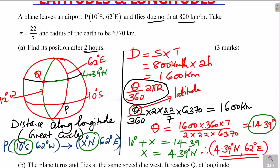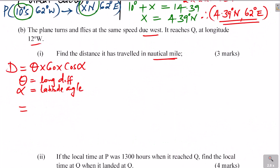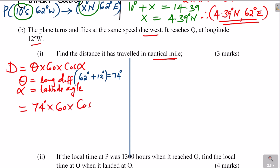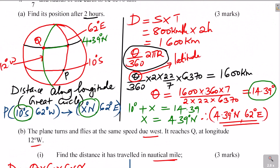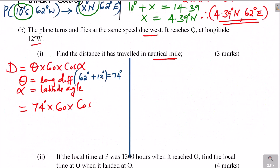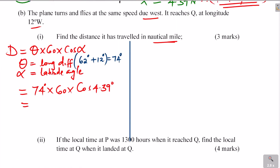Since one is to the east and the other to the west, we simply add: 62 + 12 = 74 degrees longitude difference. So distance = 74 × 60 × cos(4.39°). Both P's new position and Q lie on latitude 4.39 degrees. Working this out: 74 × 60 × cos(4.39°) = 4426.97 nautical miles.